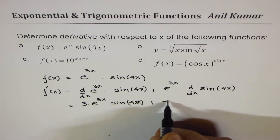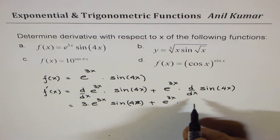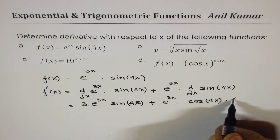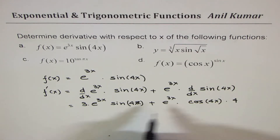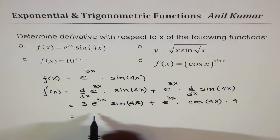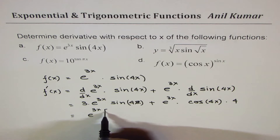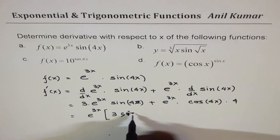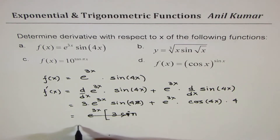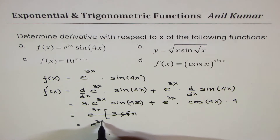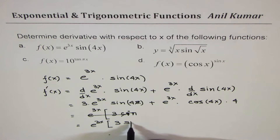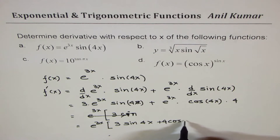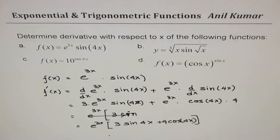For the second term, we have e^(3x) times the derivative of cos(4x) times the derivative of the inside term, which is 4. We can then factor out e^(3x), giving us e^(3x) times (3 sine(4x) plus 4 cos(4x)). That is the solution for this question.